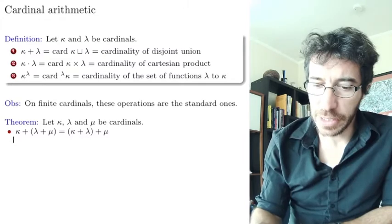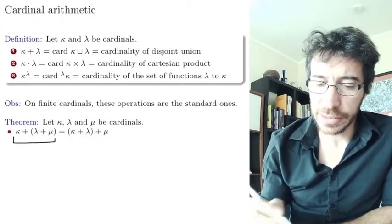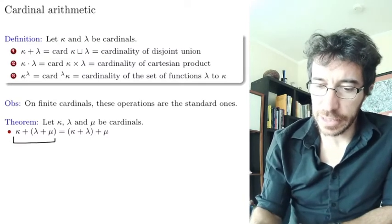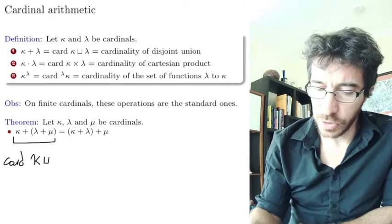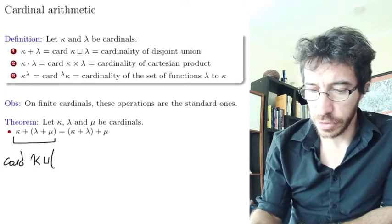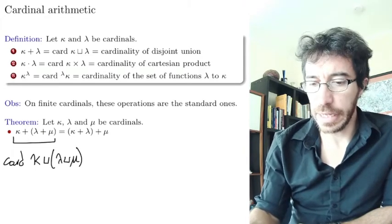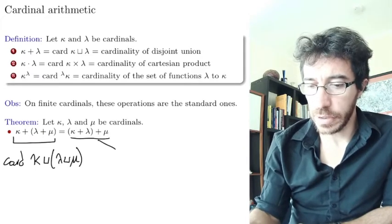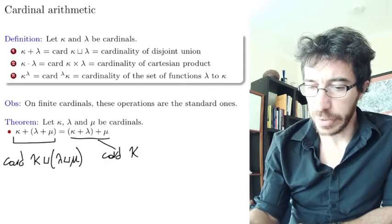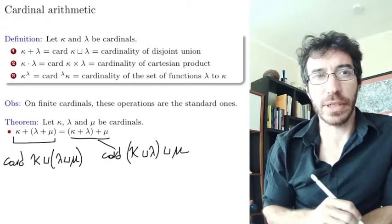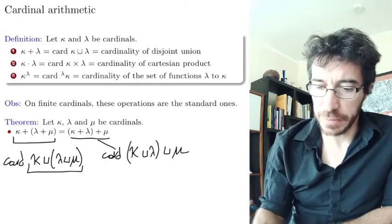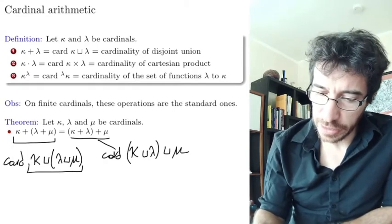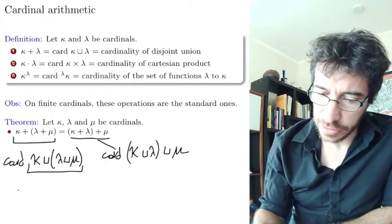This set up here is the cardinality of the disjoint union (kappa ⊔ lambda) ⊔ mu, and this one is the cardinality of kappa ⊔ (lambda ⊔ mu). What is this set? Well, it is the set of pairs (0, x) for x in kappa, union the set of pairs (1, y) for y in the disjoint union of lambda and mu.